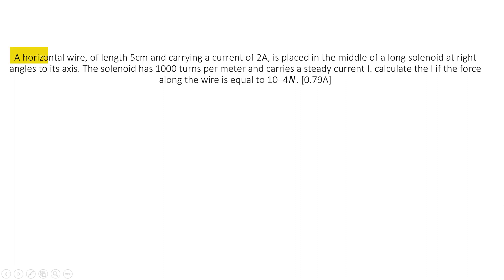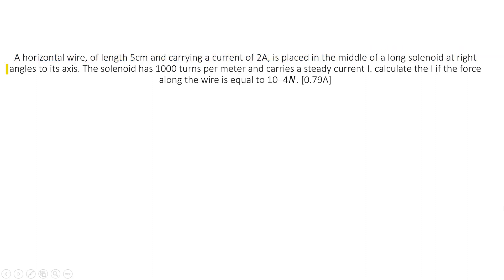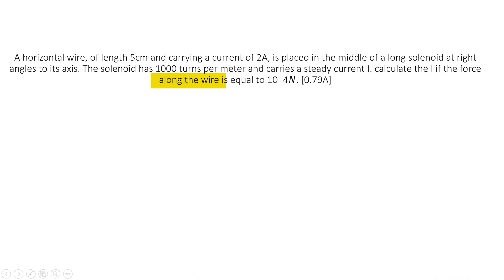A horizontal wire of length 5 cm and carrying a current of 2 Ampere is placed in the middle of a long solenoid at right angles to its axis. The solenoid has 1000 turns per meter and carries a steady current I. Calculate I if the force along the wire is equal to 10 to the power minus 4 Newton.